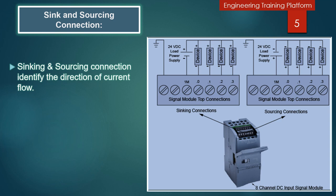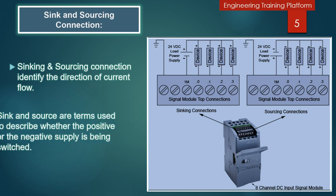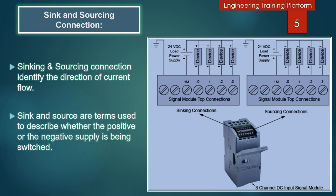Sinking and sourcing connections identify the direction of current flow. Sinking and sourcing are terms used to describe whether the positive or the negative supply is being switched. For the sinking connection, you can see the 24 volt DC load power supply — the positive and negative connections go to the device, and the other side of the device connects to the module. From the load power supply, the negative is directly connected to the module. This type of supply is called the sinking connection.